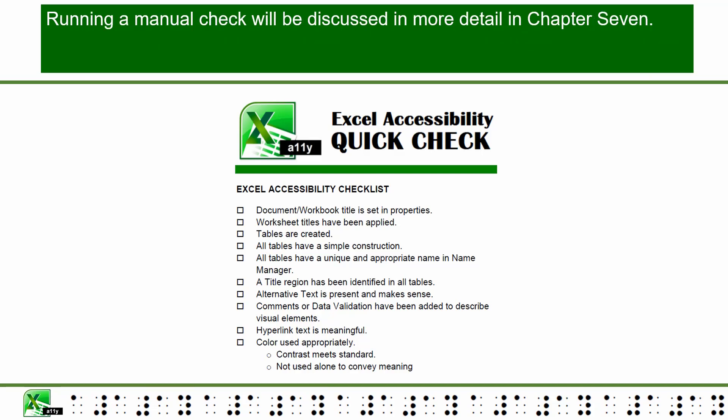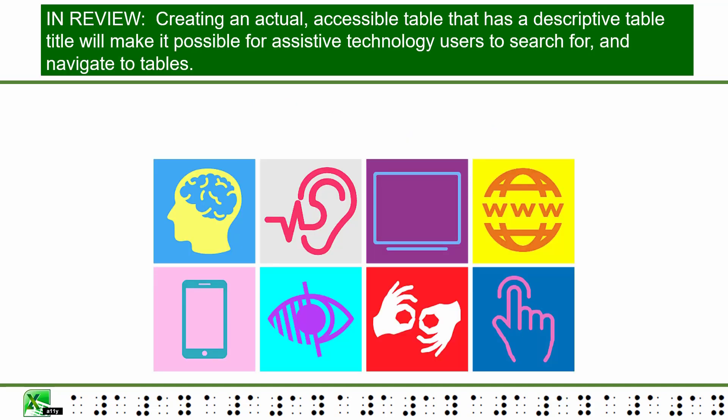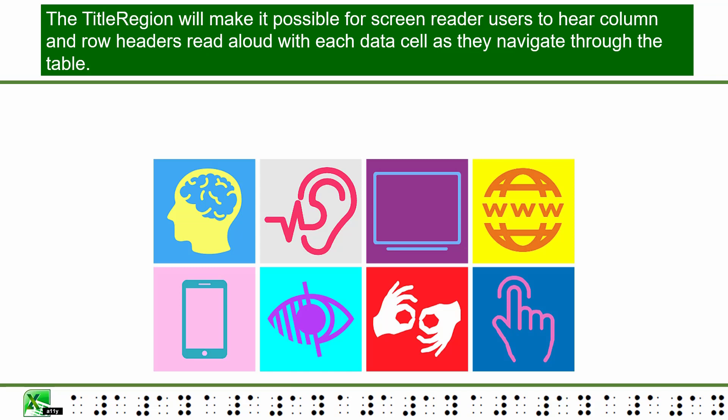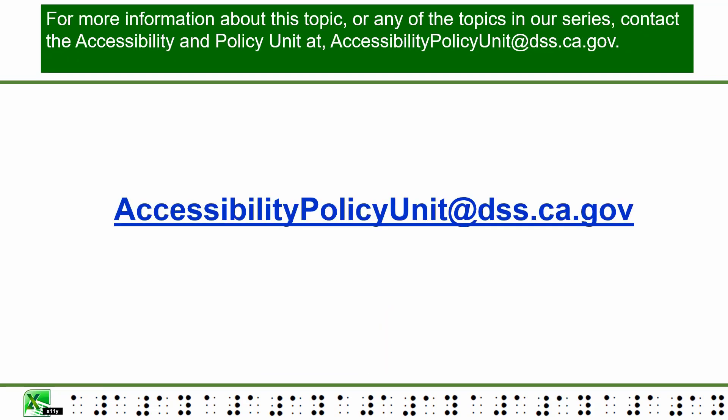Running a manual check will be discussed in more detail in Chapter 7. In review: creating an accessible table with a descriptive table title makes it possible for assistive technology users to search for and navigate to that table. The title region makes it possible for screen reader users to hear column and row headers read aloud with each data cell as they navigate. For more information, contact the Accessibility and Policy Unit at accessibilitypolicyunit@dss.ca.gov.